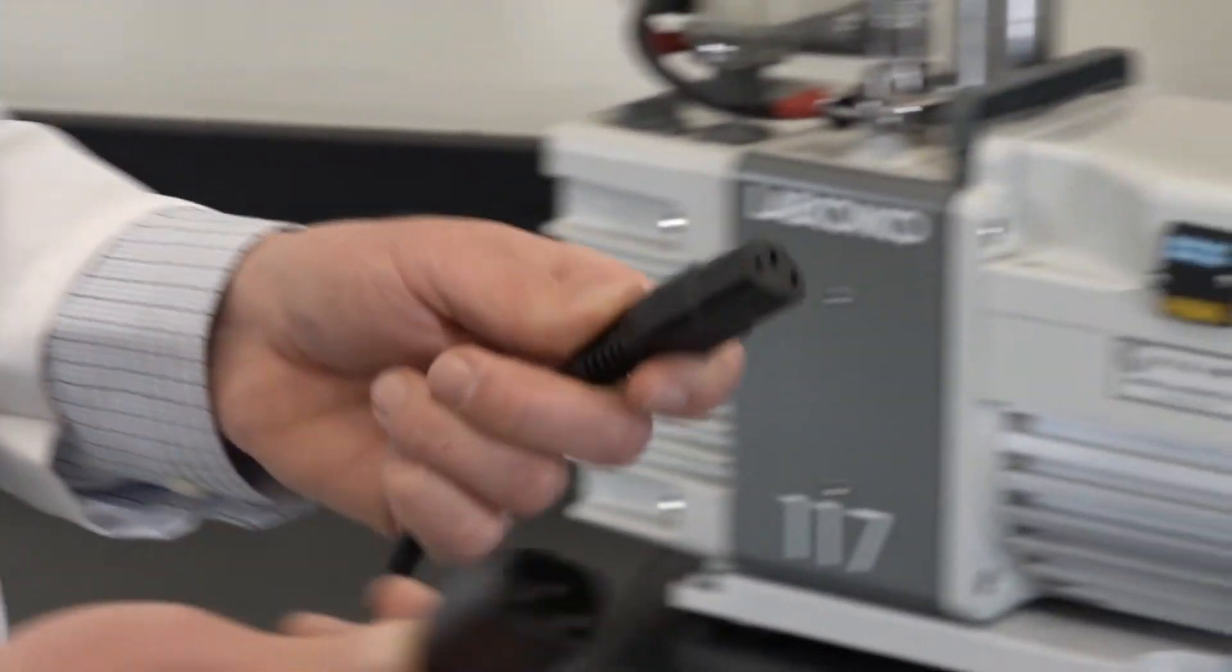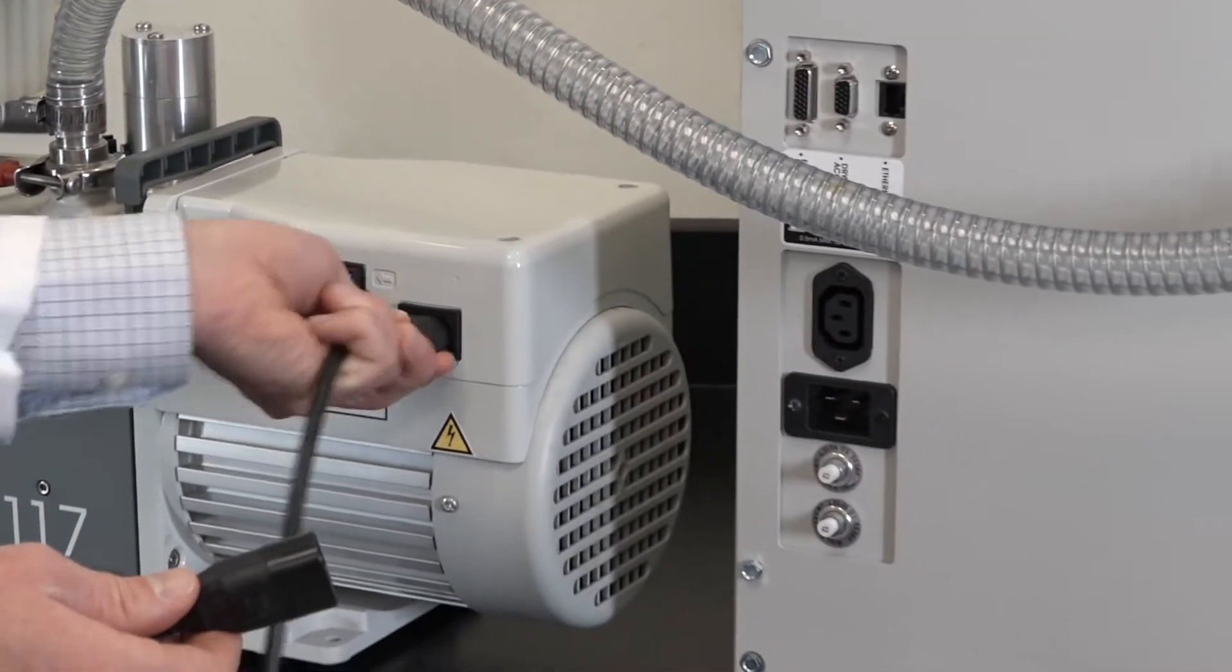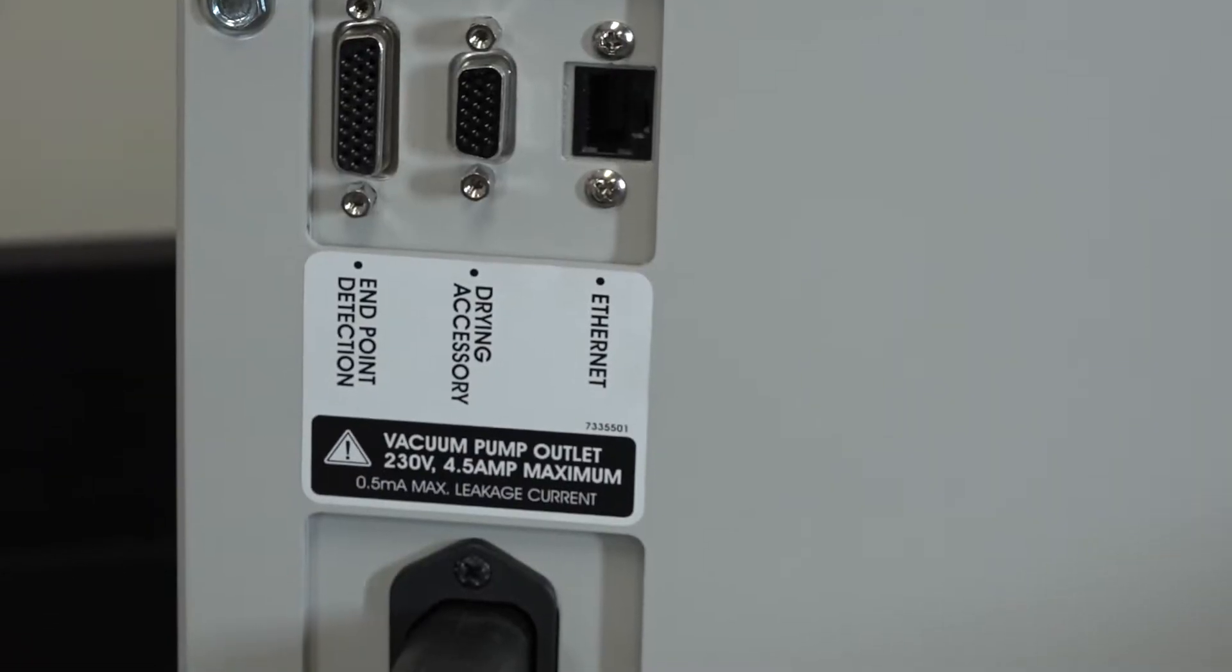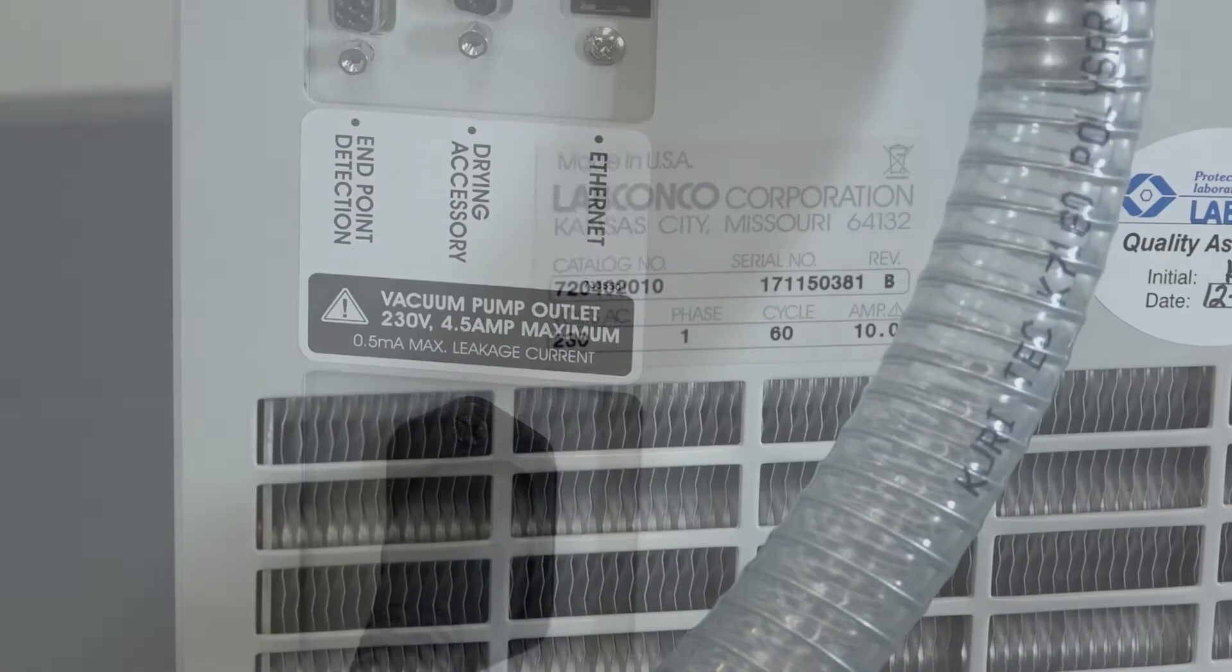Plug the vacuum pump into the outlet located on your Freezone so that your freeze dryer can control the vacuum level. The electrical requirements of the vacuum pump and the Freezone need to match.